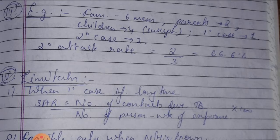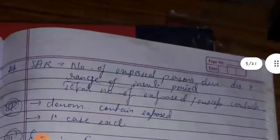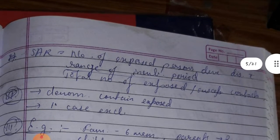The secondary cases are two more. The secondary attack rate is two by five — that is, the two secondary cases out of the five exposed persons during the range of the incubation period.